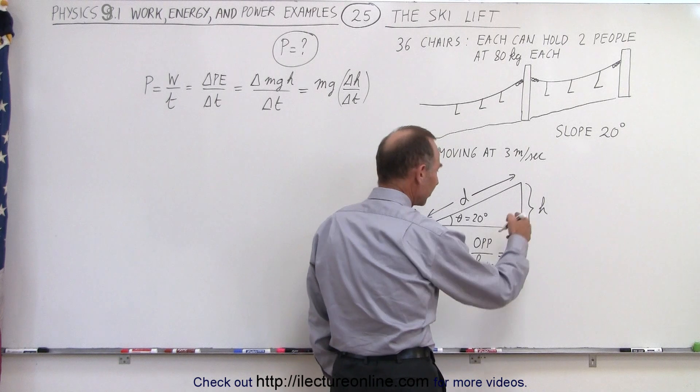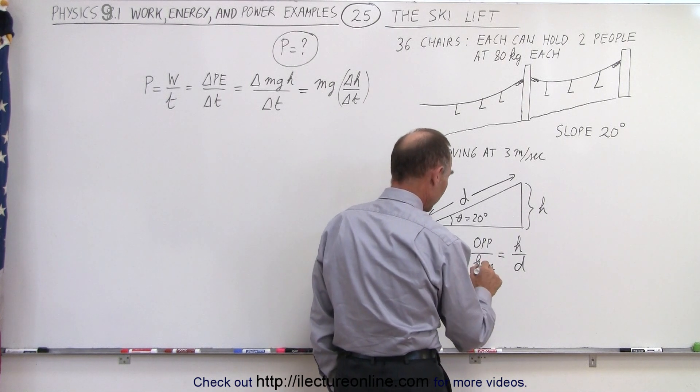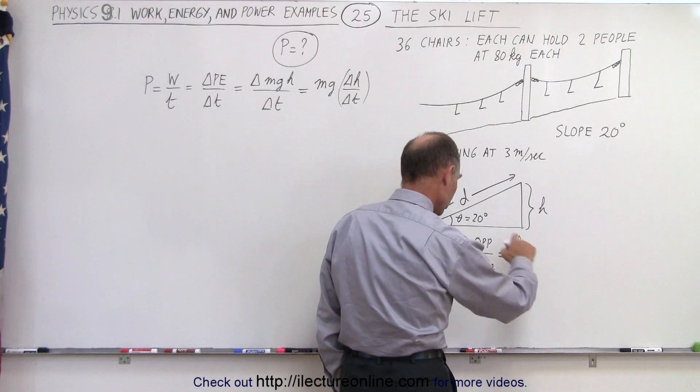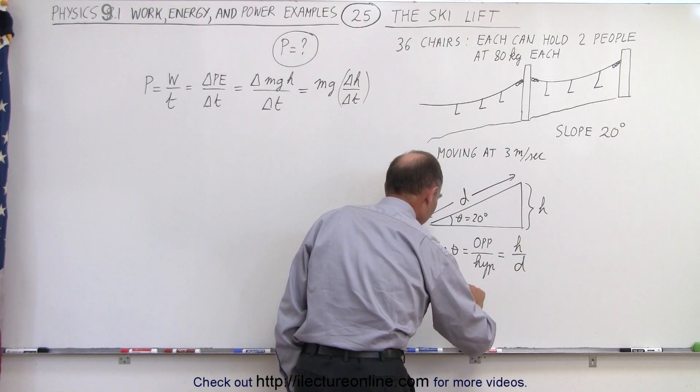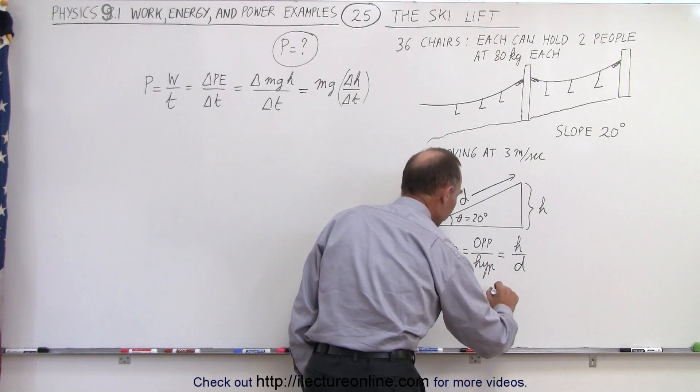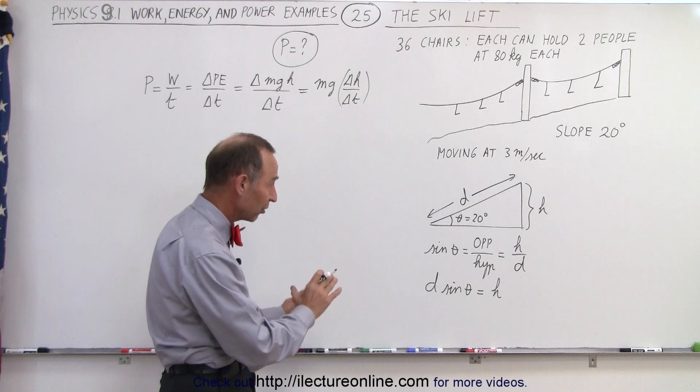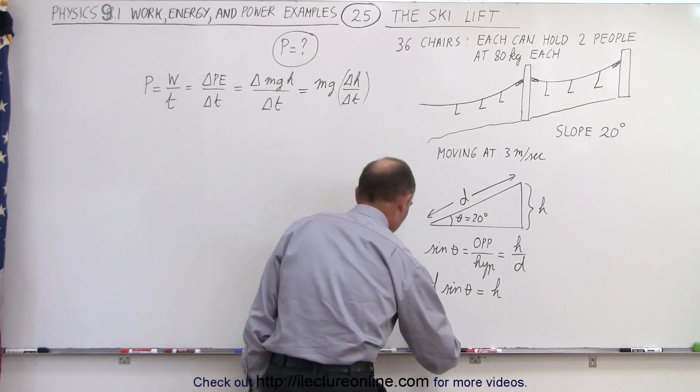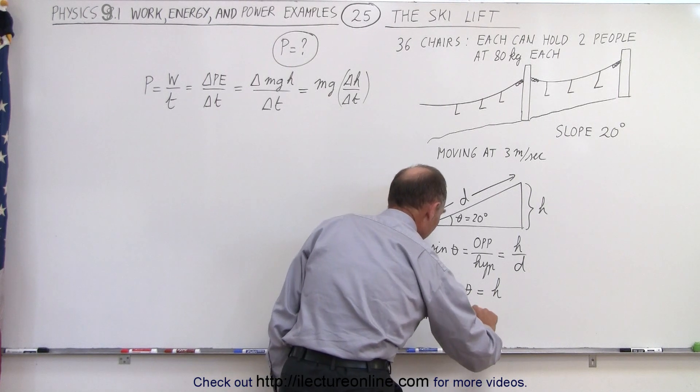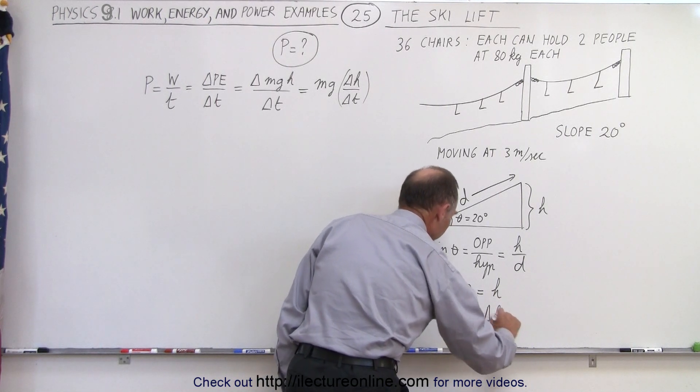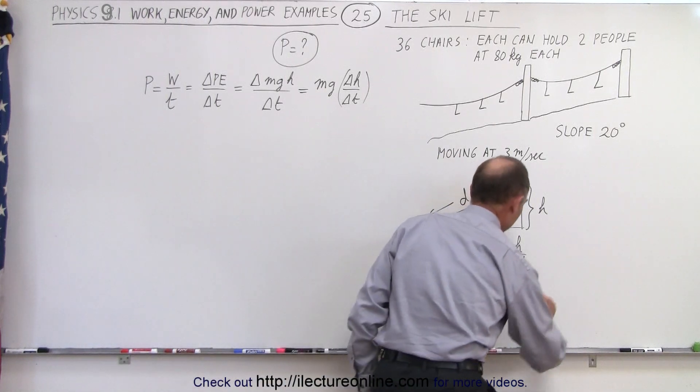If we now divide both the numerator and denominator by delta T. So what we're going to do first is we're going to move this over here. Distance times the sine of theta is equal to the height. And now what we're going to do is we're going to take the change of distance and the change of height, so that means delta D times the sine of theta is equal to delta H. And now we're going to divide both sides by delta T.